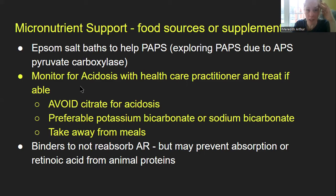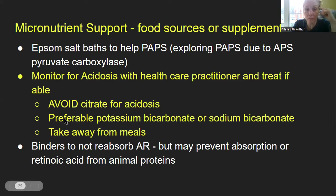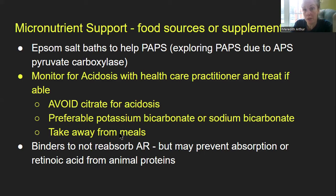Monitor for acidosis with a healthcare practitioner and treat if possible. If you're in acidosis, you won't be able to make glutathione because you can't get cysteine into the cells, and cysteine is the limiting factor in making glutathione. Avoid citrate for acidosis — no potassium citrate or magnesium citrate — because there's too much citrate going on in this system and it leads to more acidosis or more lipid production. Preferably use potassium bicarbonate or sodium bicarbonate to restore pH levels, taken away from meals so they don't interfere with mineral absorption.